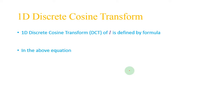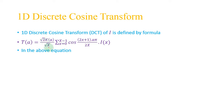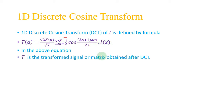The 1D Discrete Cosine Transform is defined by the formula: T(a) = sqrt(2/X) * K(a) * summation from x=0 to X-1 of cos((2x+1) * a*pi / (2X)) * I(x).